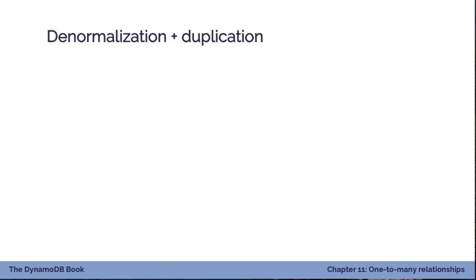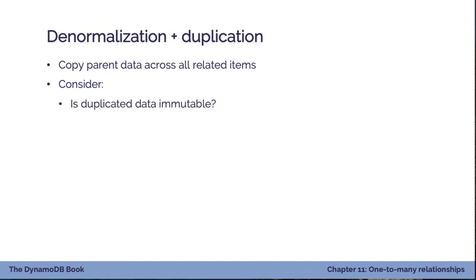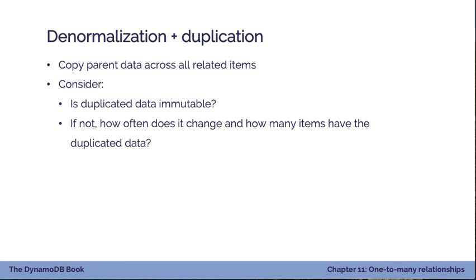To summarize: you're copying parent data across all related items — Stephen King's info is copied across each of his book items. There are two questions to consider. First, is the duplicated data immutable? Stephen King's birthday won't change, so that's fine. But if it could change — like an address — you'd have to update many items. Second, if it's not immutable, how often does it change and how many items have that duplicated data? If it changes once a year and only affects two items, duplication may still be acceptable. But if it changes frequently or is spread across many items, you might not want this strategy.